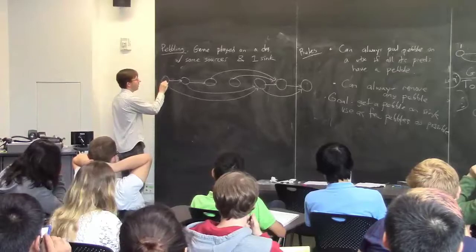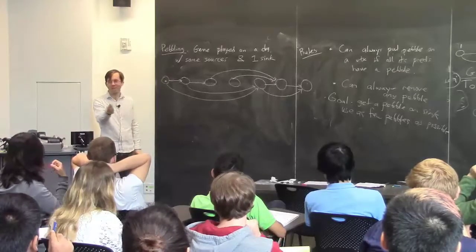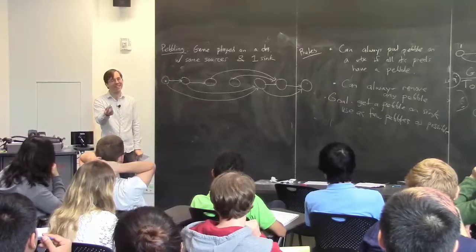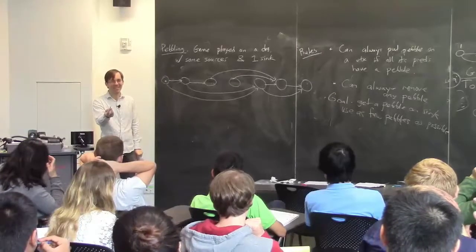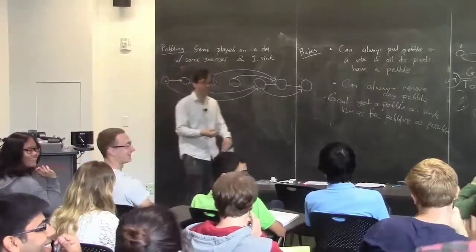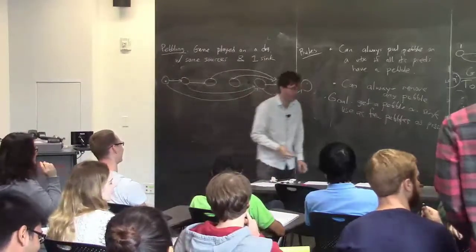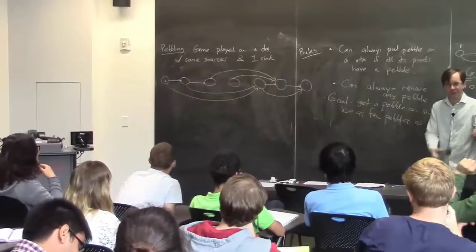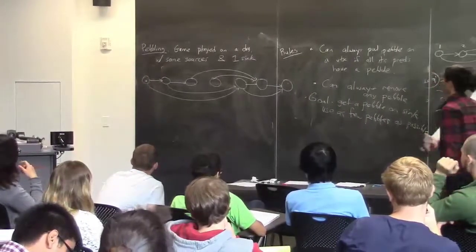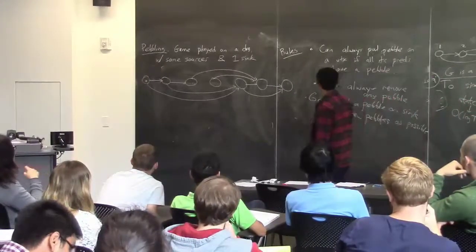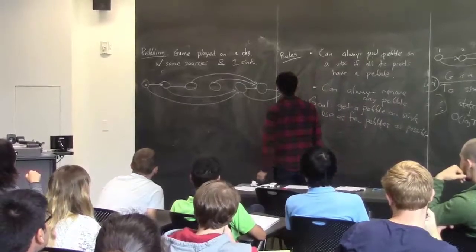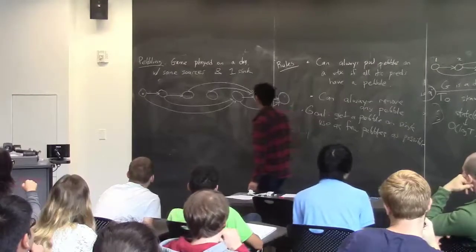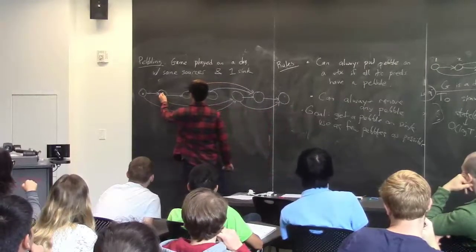Let's pebble this graph — would somebody like to do it? I'll start: the pebbles will be green. I've put a pebble on a source. Who wants to come and finish it? I think you can do it with four and you can't do it with three, so you should all mentally check that.